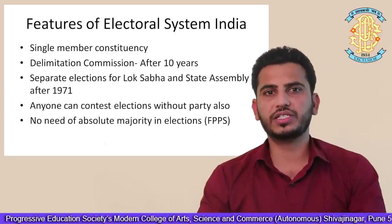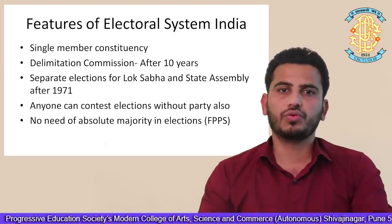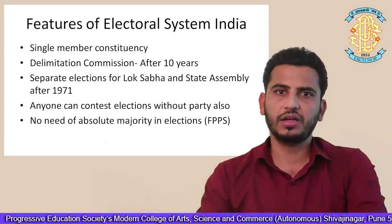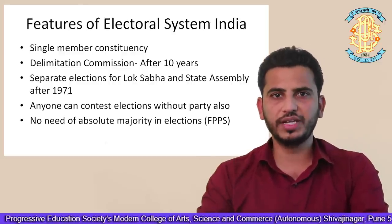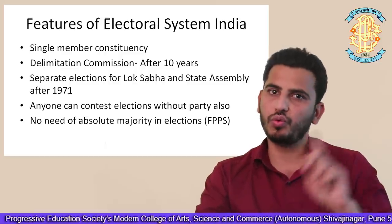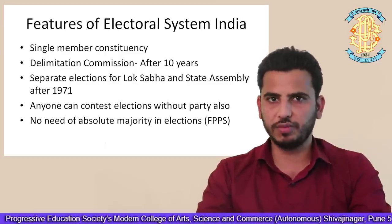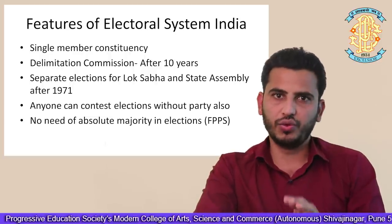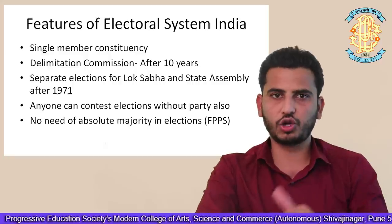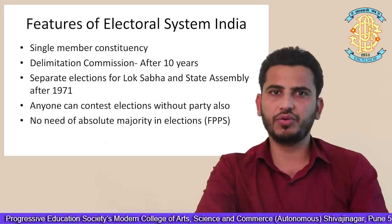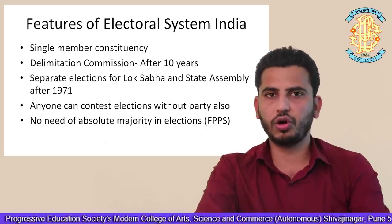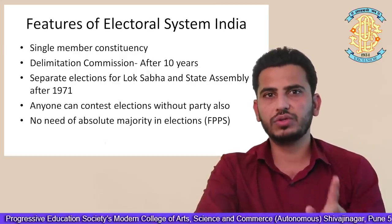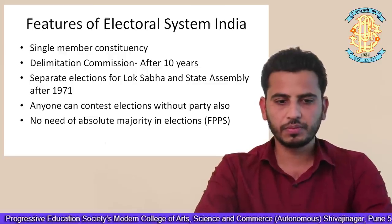Now we will come to the features of the electoral system in India. The first feature is regarding constituency — here in India we have a single-member constituency system, which means there can be only one member for one assembly seat or Lok Sabha seat. You cannot have two members from one constituency. Similarly, in state legislatures and legislative assemblies, we have one member whom we call MLA — Member of Legislative Assembly.